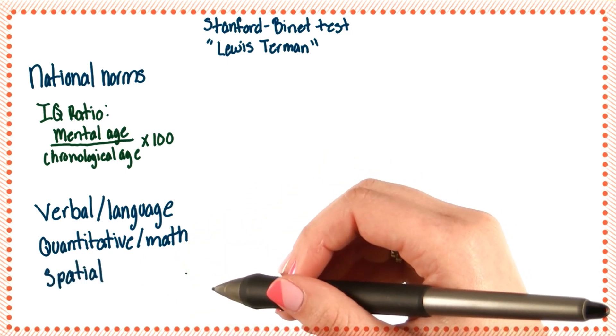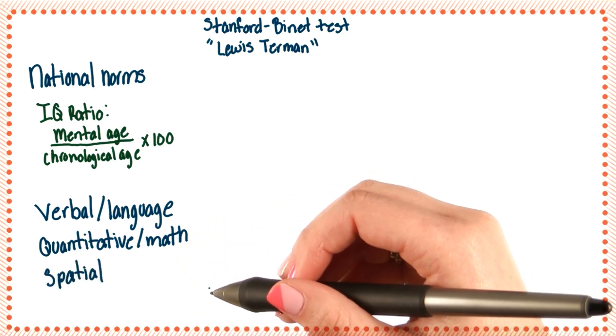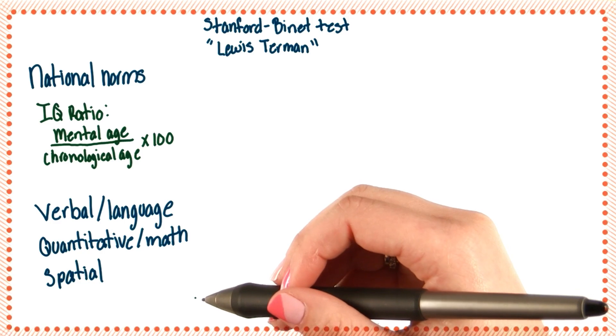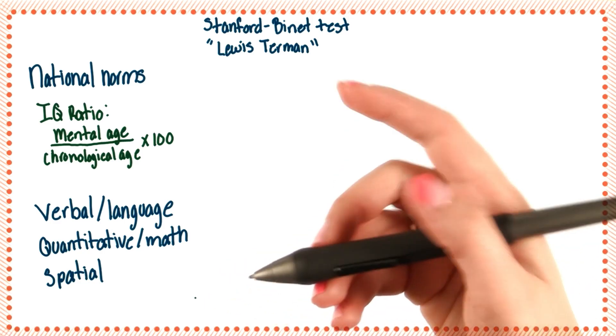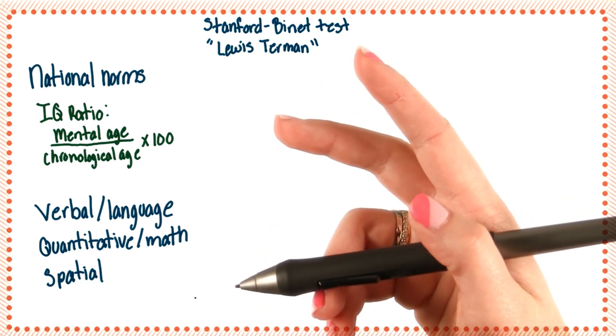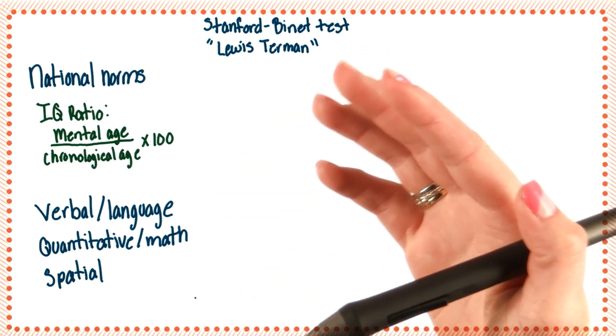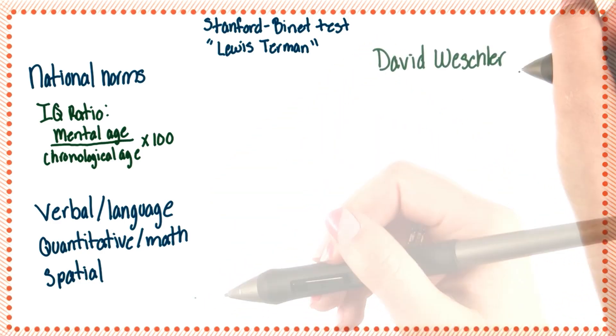One problem with the test, however, was that the questions they used were only for children and teenagers, so adult intelligence couldn't be measured.